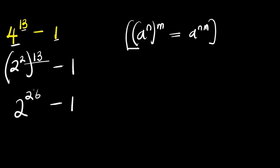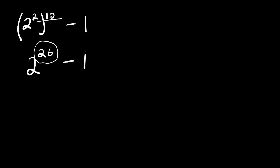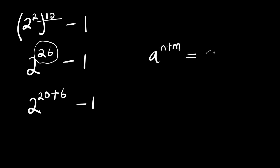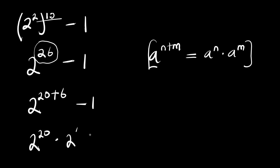We can express 26 as the summation of 20 and 6. So we have 2 to the power of 20 plus 6, minus 1. We use the rule: a to the power of n plus m equals a to the power of n times a to the power of m. This gives us 2 to the power of 20 times 2 to the power of 6, minus 1.